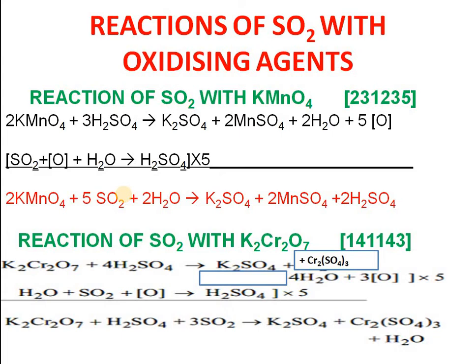Using the partial equation method, after adding the equations you get the final balanced equation: 2KMnO₄ + 5SO₂ + 2H₂O → K₂SO₄ + 2MnSO₄ + 2H₂SO₄. Please learn this method carefully, because when you study the chapter on transition metals and d-f block, all these reactions involving KMnO₄ are very important.